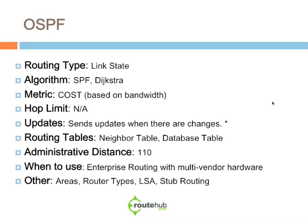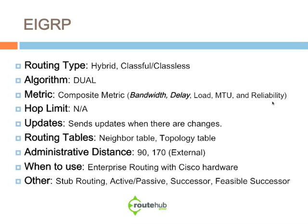EIGRP is a Cisco-based routing protocol and is considered a hybrid — it has both classful and classless capabilities. The algorithm it uses to determine the best possible path through its topology table is called DUAL. EIGRP uses a composite metric consisting of five components: bandwidth, delay, load, MTU, and reliability. However, EIGRP only uses bandwidth and delay, multiplied by 256, to produce the actual composite metric.